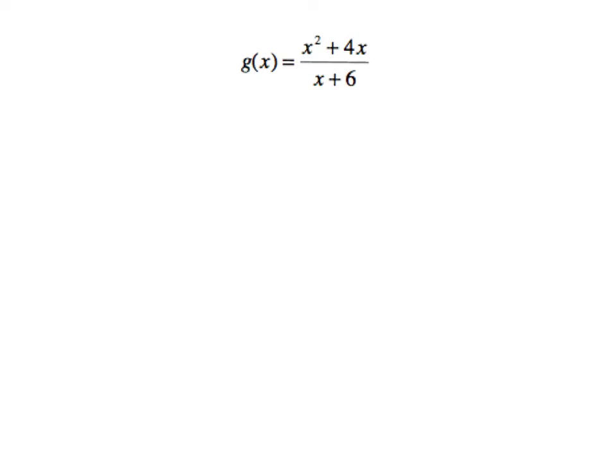g of x is an example of the second part of our rule. Well, what if the top is higher power than the bottom? Notice the top is second degree, the bottom is first degree, so the top is higher power. Well, that means as x gets large, the top is going to be getting significantly larger than the bottom.